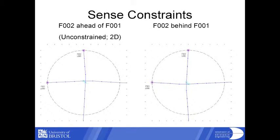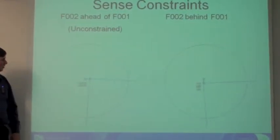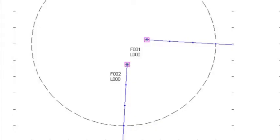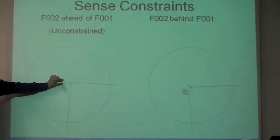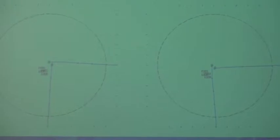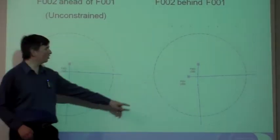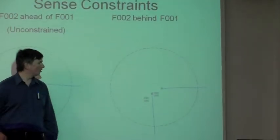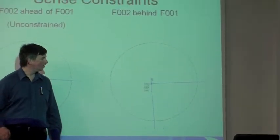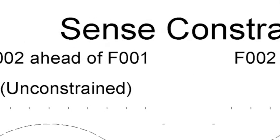We can do the same for horizontal resolutions. Here are two aircraft crossing at the same altitude. Without any sensor constraint, flight two goes around the front of one. The separation regions are actually quite small on this scale - they've maintained separation even if it doesn't look it. If we don't like that and want two to go behind one instead, we specify that constraint and sure enough that happens. So we can specify the sense and we get what we want.